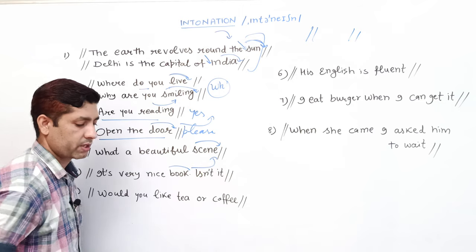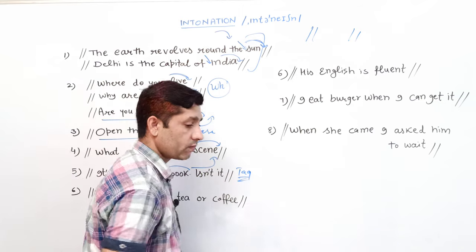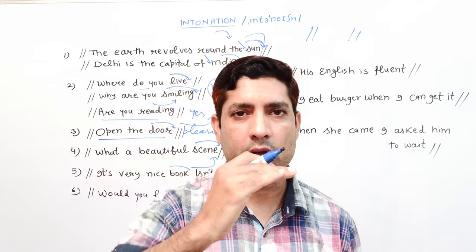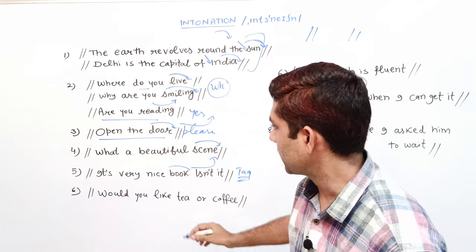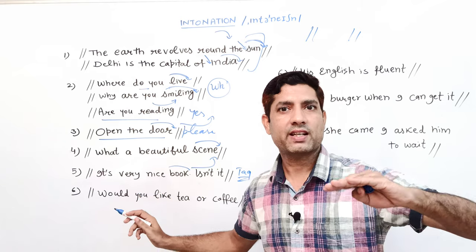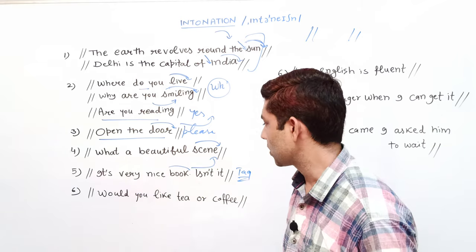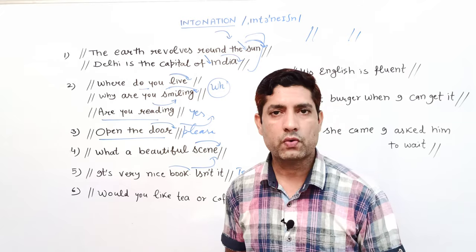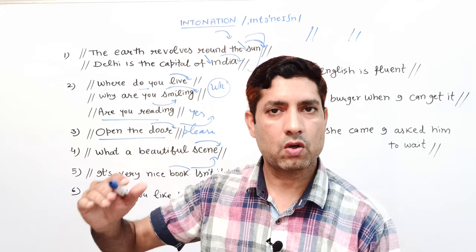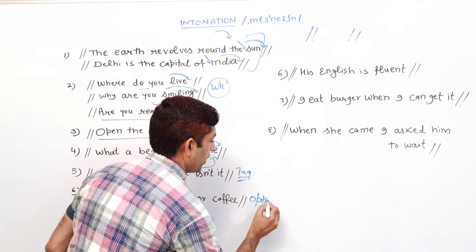'It's a very nice book, isn't it?' — tag questions में tone rising रहती है। जो tag questions होते हैं, उनमें rising tone आती है, जैसे 'isn't it?'